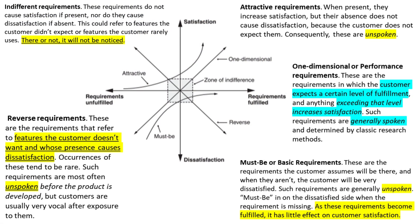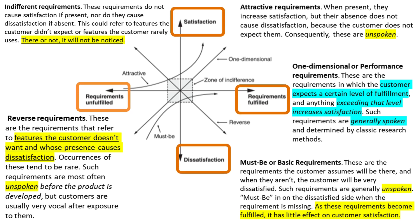Here is a detailed view of the Kano model, which has five requirements. We will discuss four of them in detail: basic, performance, attractive, and reverse requirements. Take note of the x and y-axis having fulfilled and unfulfilled versus satisfaction and dissatisfaction. Fulfilled and unfulfilled can also be replaced with implemented or not implemented.